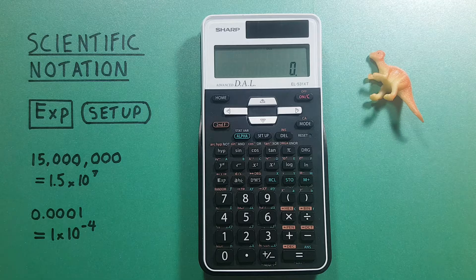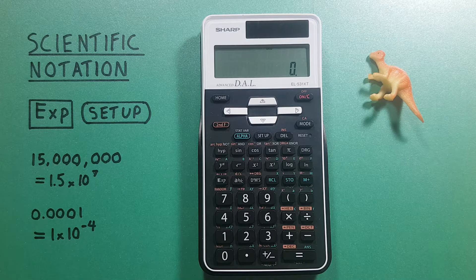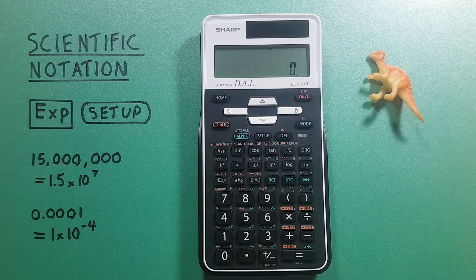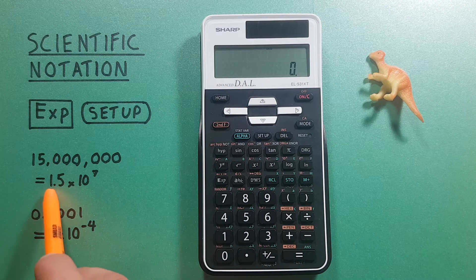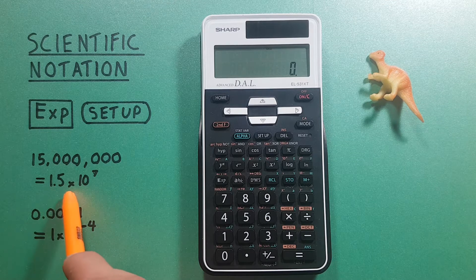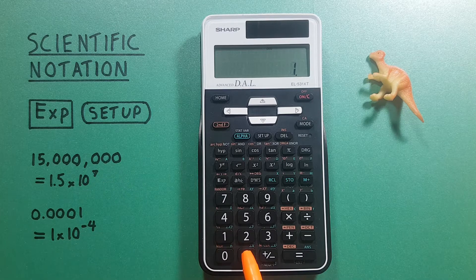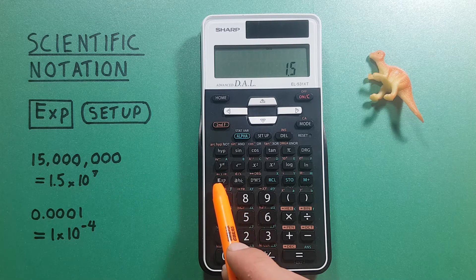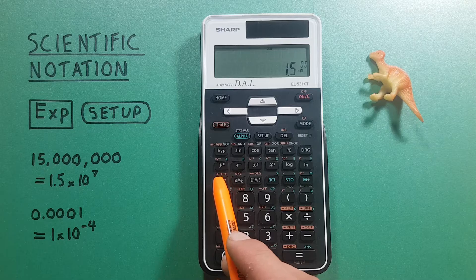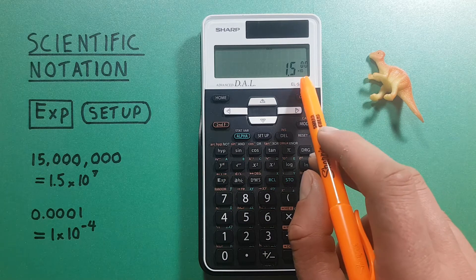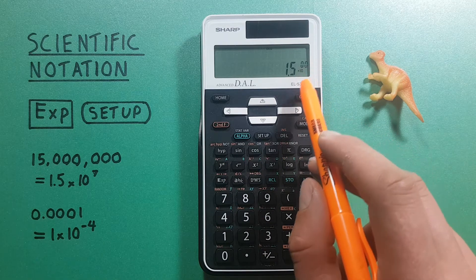Alright to get started, if we're given a number in scientific notation and wish to enter it in our calculator, like for instance let's say we were given 1.5 times 10 to the seventh, we can enter it as 1.5 and then this EXP key which represents our times 10 to the whatever number. So you can see on the screen here we now have 1.5 times 10 to the zero.